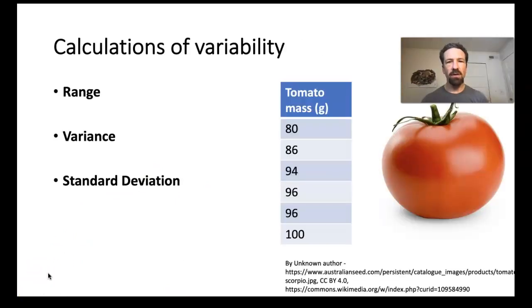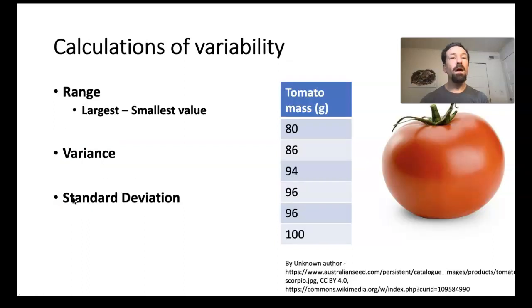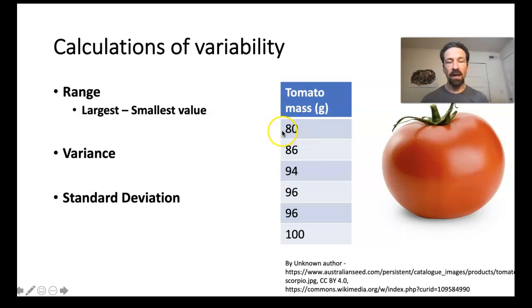Next, we discuss measures of variability for continuous variables, including the range, variance, and standard deviation. The range is the easiest to calculate—it is simply the largest value minus the smallest value. Here, the largest tomato was 100 grams and the smallest was 80 grams, so the range is 20 grams. However, it only uses information from the two extremes, meaning the variation in all remaining samples has no effect and it is not a great measure.